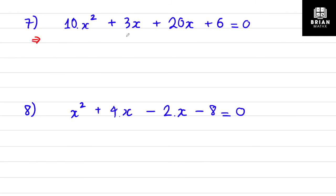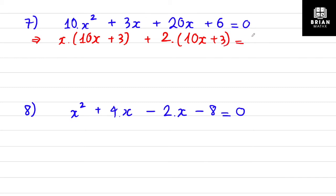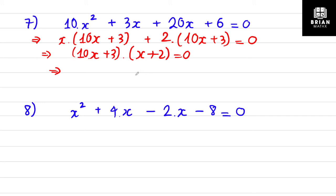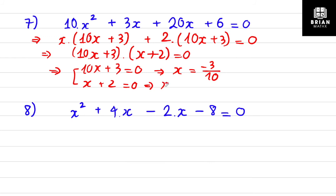Question 7: h is the common factor; you get (10x + 3) left. For the terms 20x and 3 and 6, I take 2 outside, giving (10x + 3), because 6 = 2 times 3. So (10x + 3)(h + 2) = 0. Setting each bracket to zero: h + 2 = 0 and 10x + 3 = 0, giving h = -2 and x = -3/10.